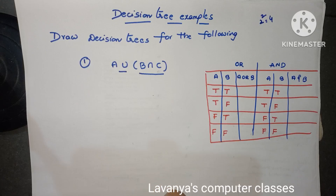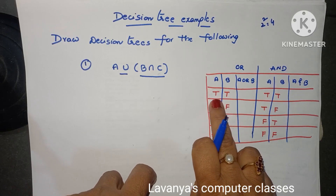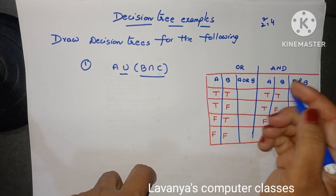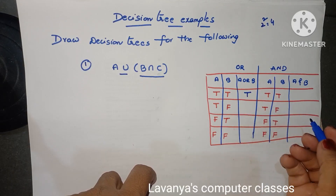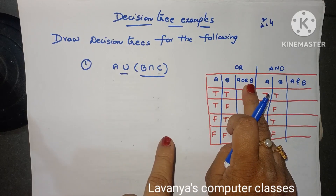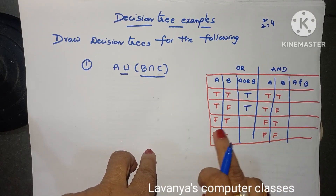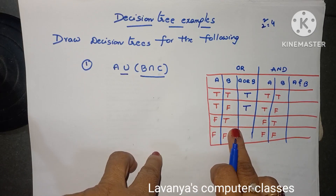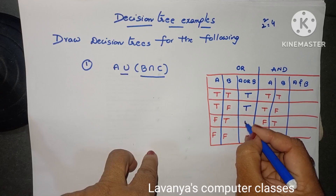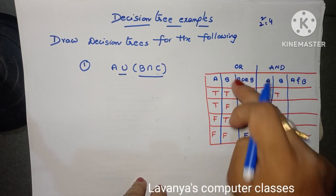How the OR operator works: whenever we use the OR operator between any two variables, if any one variable is true then the total result is true. True and true — result is true. True and false — A is true, B is false, no problem, result is true. False and true — any one is true, result is true. But in the last case, both are false, so the result is false. This is the working of the OR operator.